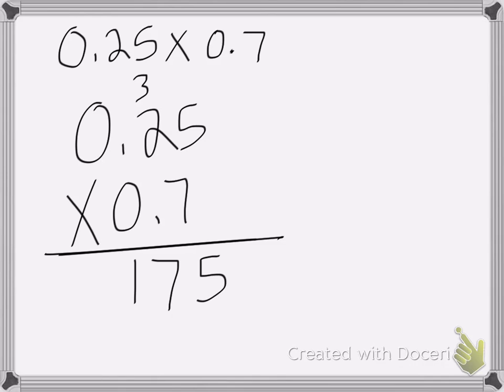To figure out where the decimal point goes, you're going to count how many decimal places you have total. So we're going to count 1, 2, 3. See how I counted all 3 decimal places that are in my problem. So that means my decimal place has to go over 3 places.